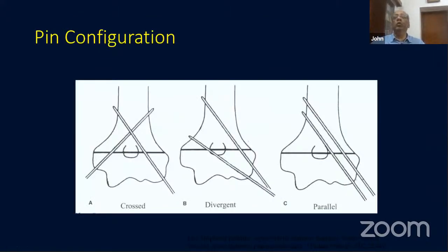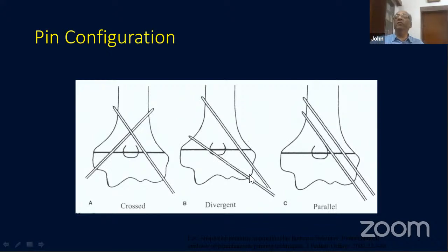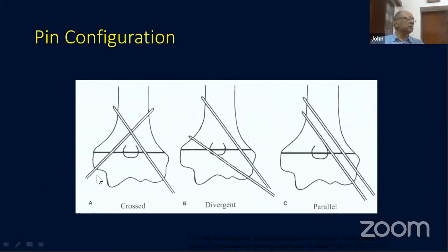The usual pin configurations are: crossed pins (the traditional method) or two lateral divergent wires. Due to the risk of ulnar nerve injury with the medial pin, many surgeons now prefer two divergent lateral wires, with one typically passing through the olecranon fossa engaging four cortices. Wires are usually removed at three weeks in the OPD without anesthesia, which most children tolerate well.